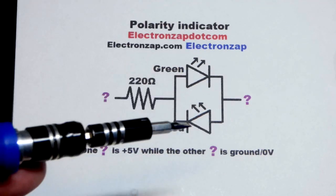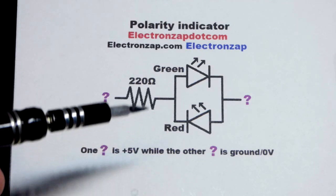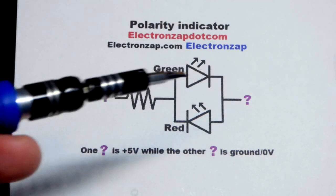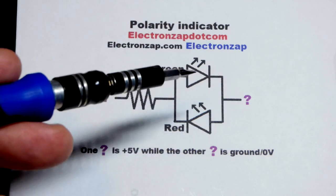So LEDs are a type of diode. They only conduct current in one direction and so they need a voltage built up across them. The anode needs to be more positive than the cathode because they're diodes.